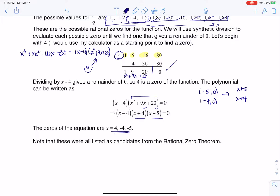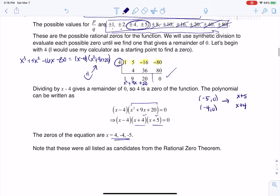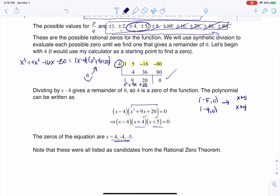So here are my three zeros. They were all listed as candidates in that rational zero theorem, but I sure didn't want to try all of those possible routes. Thanks so much everyone, bye.